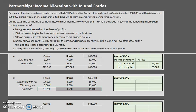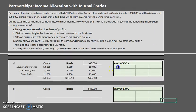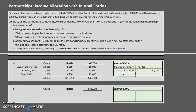Adding everything up: Garcia receives $26,250 and Harris receives $18,750. Checking: $26,250 plus $18,750 equals $45,000. For the journal entry: debit income summary for $45,000, credit Garcia's capital by $26,250, and credit Harris's capital by $18,750.